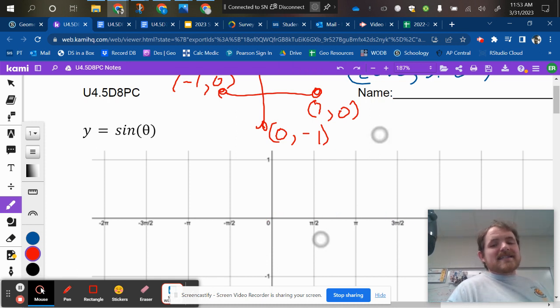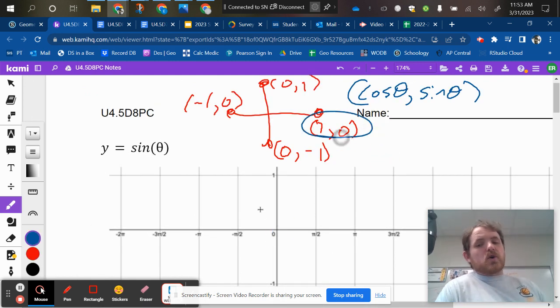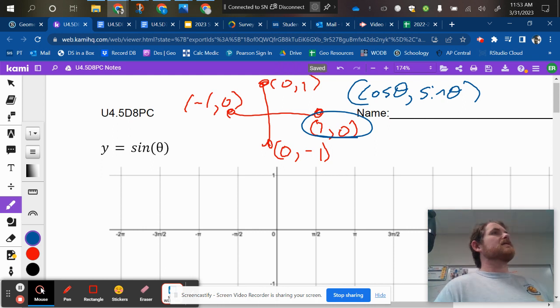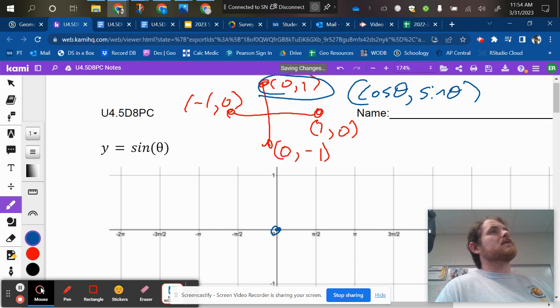So when we plug in sine of 0, we're talking about the very first coordinate. Are we talking about the x or the y part of that coordinate for sine? Y, the y coordinate, so it's 0. At pi over 2, that's this coordinate up here, and it's still sine, so are we talking about 0 or 1? We're talking about 1, okay? So you just follow the pattern from there.